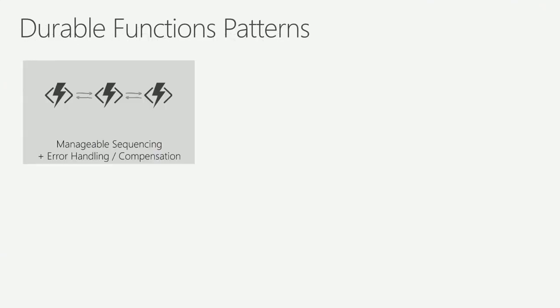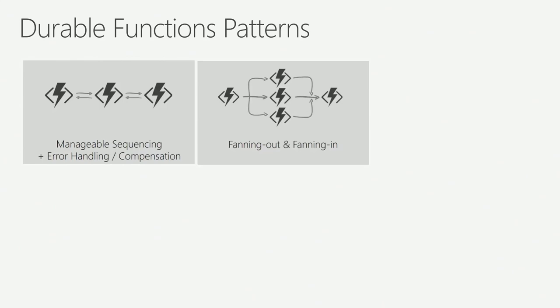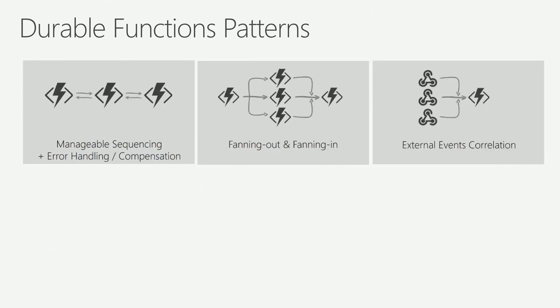Sequencing is one pattern. You can also do fan-out and fan-in with durable functions. Imagine a scenario where every week there's a batch report, and for every single record in that report you want to go execute a function. Rather than manually dropping stuff in queues, durable does it for you — you just describe it as a for loop, saying for each record call this function, and durable functions handles that for you.